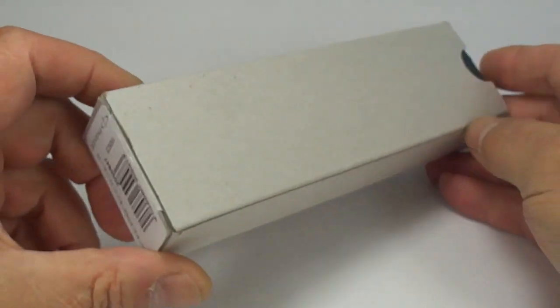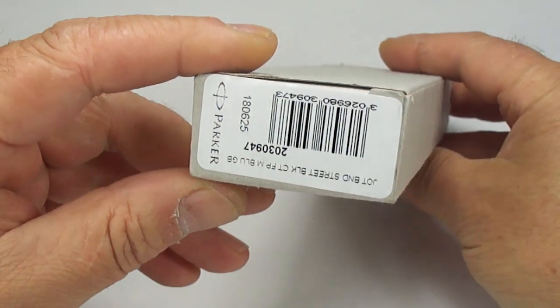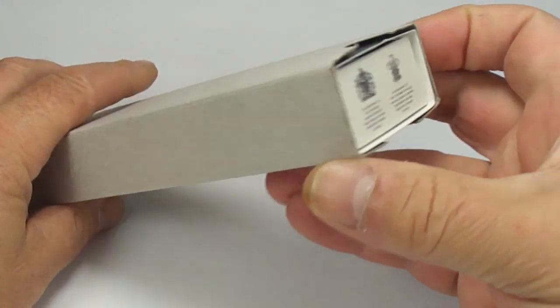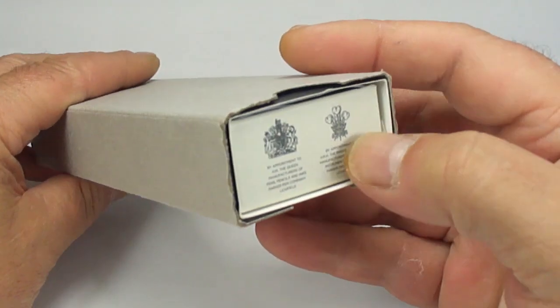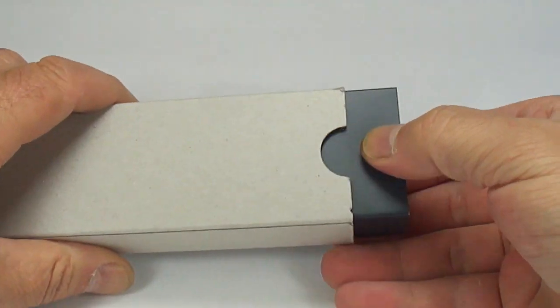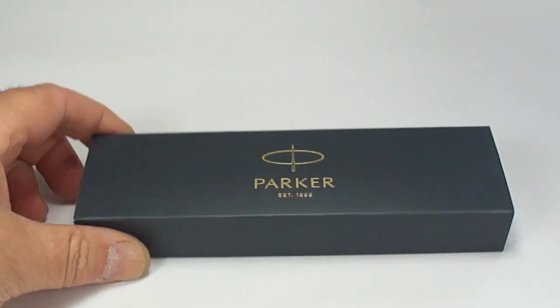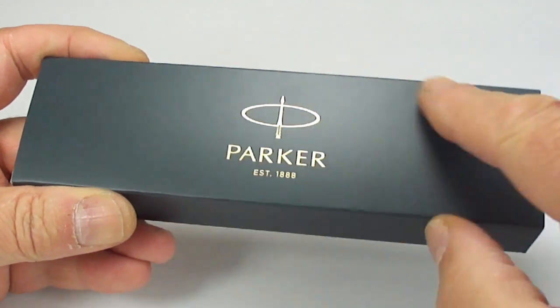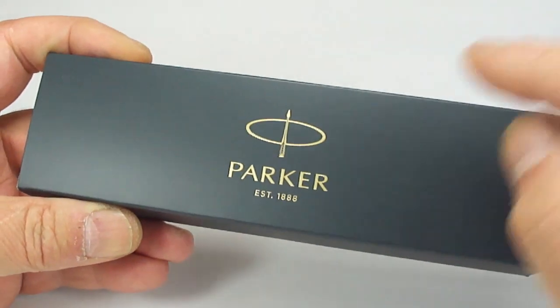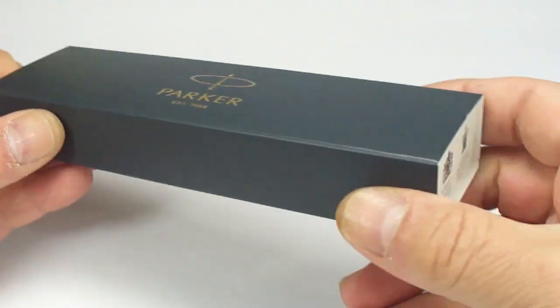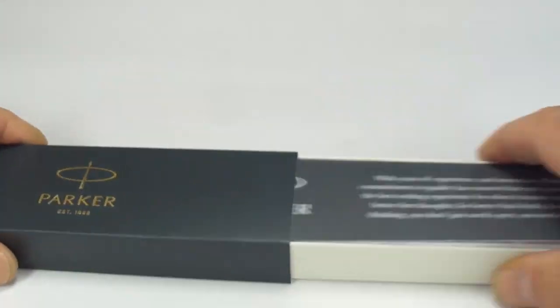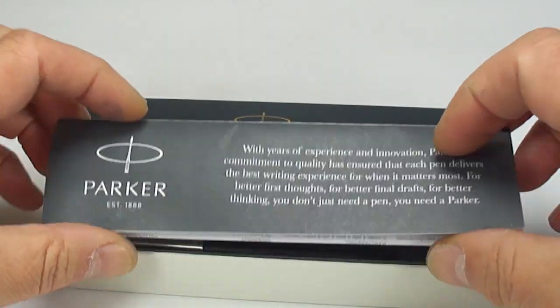As you can see it comes in this outer case, to the end you've got the pen details, to the other end the by appointment details and then if we slide out the inside sleeve like so, again you've got an outer case in black. You can see it says Parker to the very top there so let's take out the inside like so.